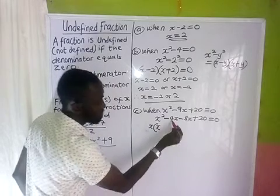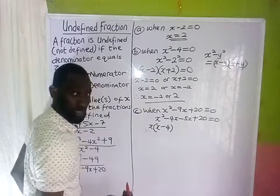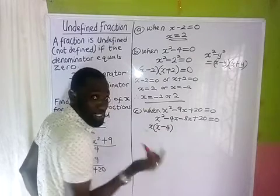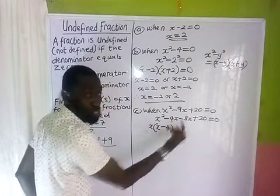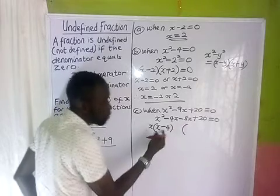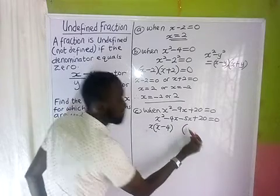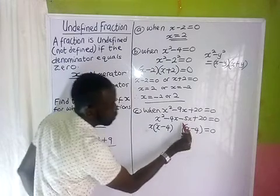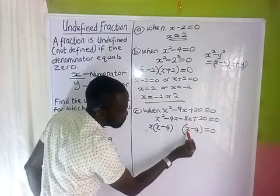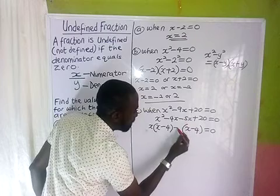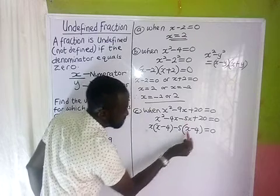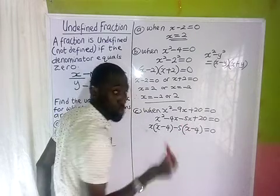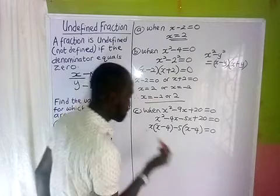Now we group: between the first two terms, s is common, leaving minus 4. Then for the second group, we open another bracket and factor out minus 5. So minus 5 times s gives minus 5s, and minus 5 times minus 4 gives positive 20. We now have s(s minus 4) minus 5(s minus 4) equals zero.